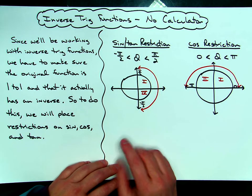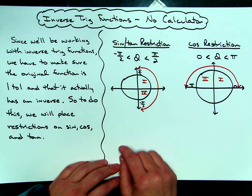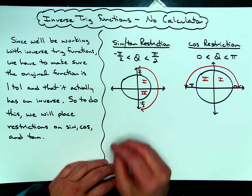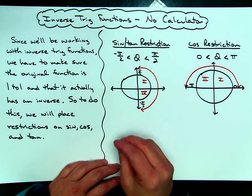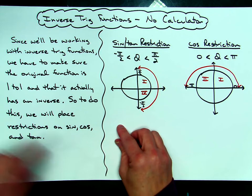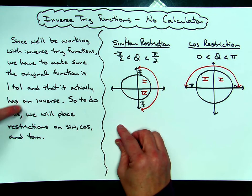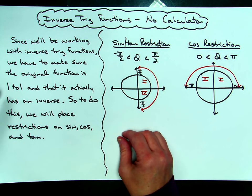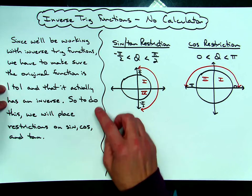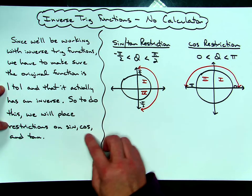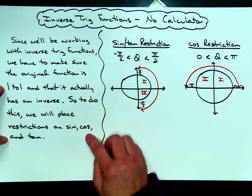Something that probably needs to be said before we start: since we're going to be working with our inverse trig functions, you need to make sure that the original function is one-to-one and that it actually has an inverse. There's a lot to it, but basically, in order to ensure those two things, we're going to place restrictions on our sine, cosine, and tangent graphs.